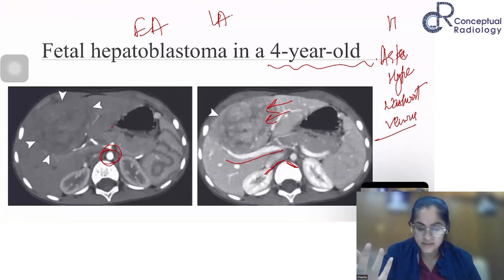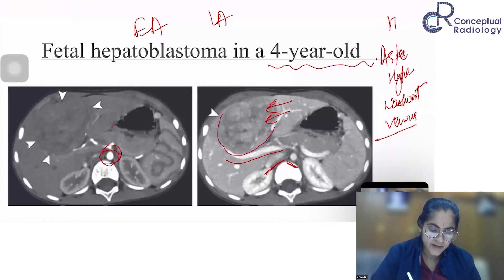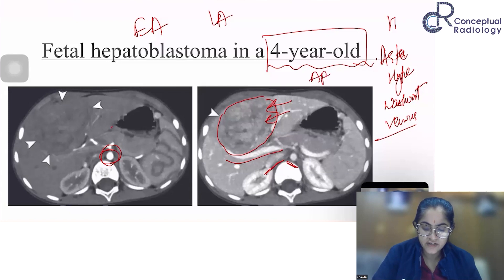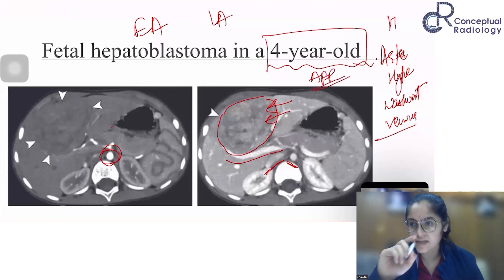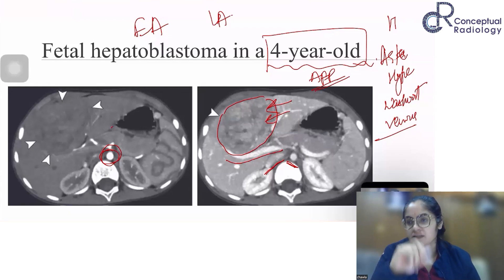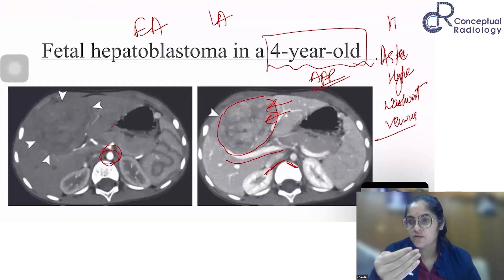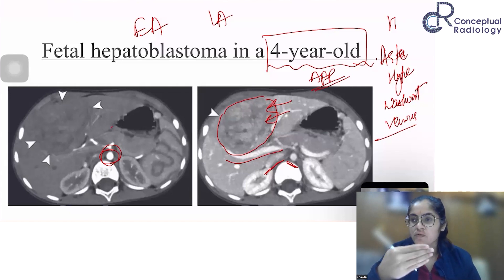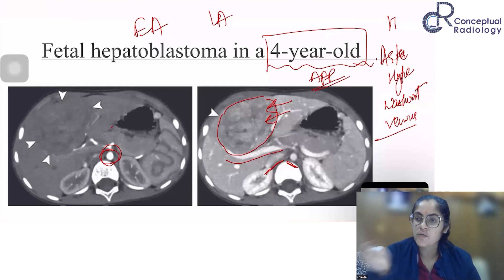The lesion is well-defined and shows washout in a young patient, so the next step is to order an AFP level. When you perform a CT, you cannot make a definitive diagnosis of hepatoblastoma on imaging alone — AFP levels corroborate your findings. Since approximately 5 out of 10 pediatric liver masses will be hepatoblastoma, unless you are certain of the morphology, you should always advise AFP testing to be safe.